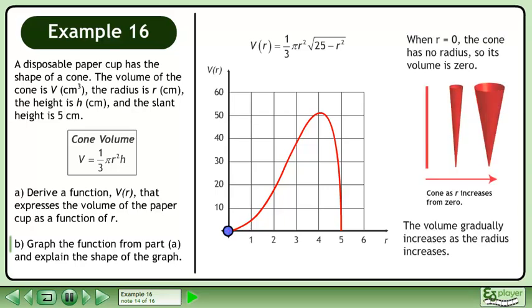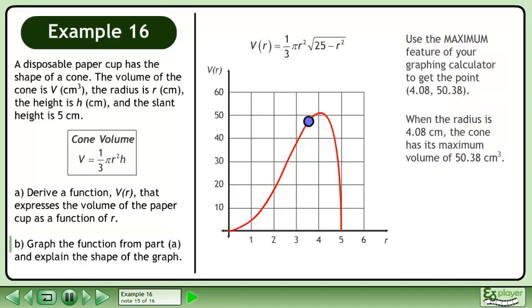When r equals 0, the cone has no radius so its volume is 0. The volume gradually increases as the radius increases. Use the maximum feature of your graphing calculator to get the point 4.08, 50.38. When the radius is 4.08 centimeters, the cone has its maximum volume of 50.38 cubic centimeters.